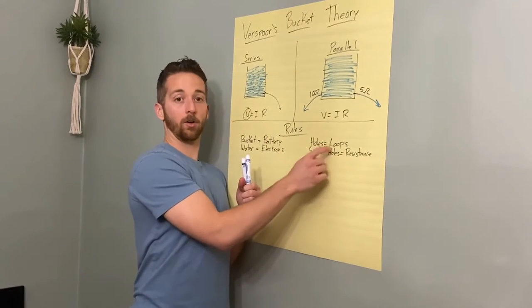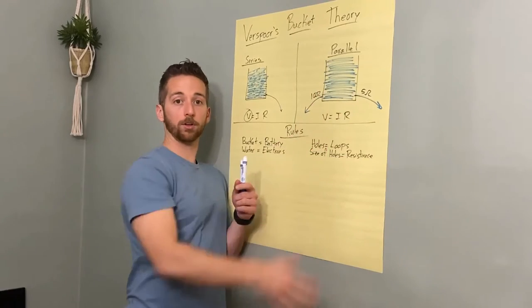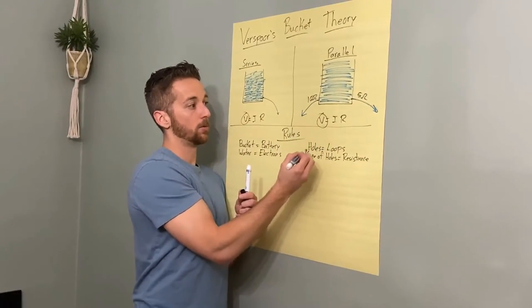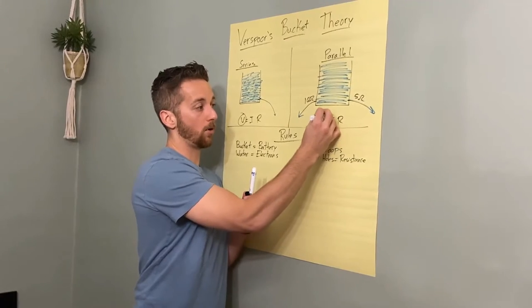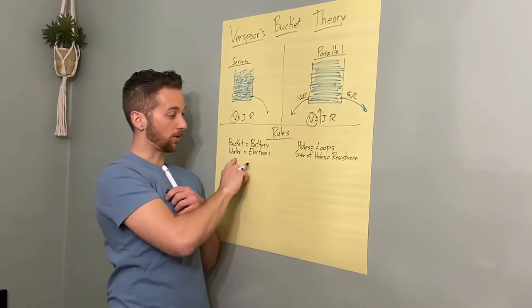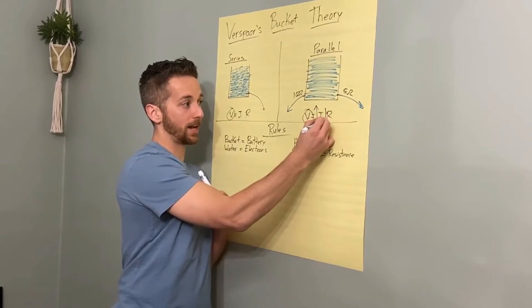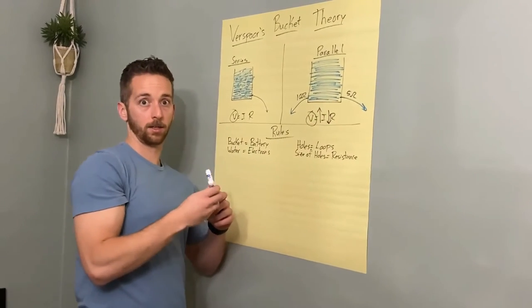Because here, the bigger the hole, the more holes there are, the more water you can lose. So according to Ohm's law, we have constant voltage, but now we're losing more water. Water is your current near your electrons. And therefore we're going to be having a lower equivalent resistance.